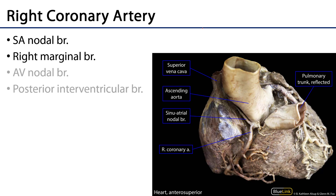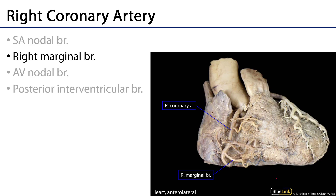Let's look at these branches cadaverically. Here's the origin of the RCA and there's the SA nodal branch. We can see the right coronary artery descending in that coronary sulcus, and at the bottom we can see the right marginal branch. From this anterolateral view we can see more of the right surface and border of the heart, with the right marginal branch going out along the inferior border.